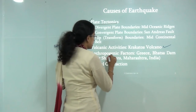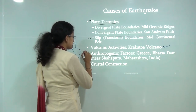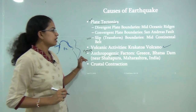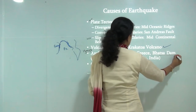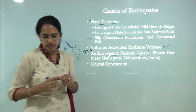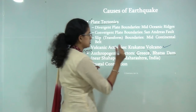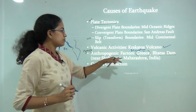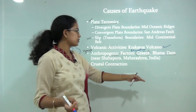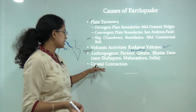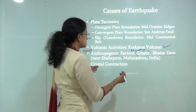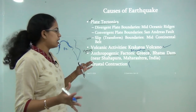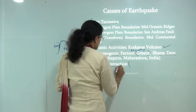There can also be anthropogenic or human-induced causes that lead to formation of earthquakes. One example is the Koyna Dam in India; another is the Marathwada Dam in Greece. Then there can be crustal contractions that occur due to sudden temperature changes or drastic changes in equilibrium that could lead to crustal contractions.